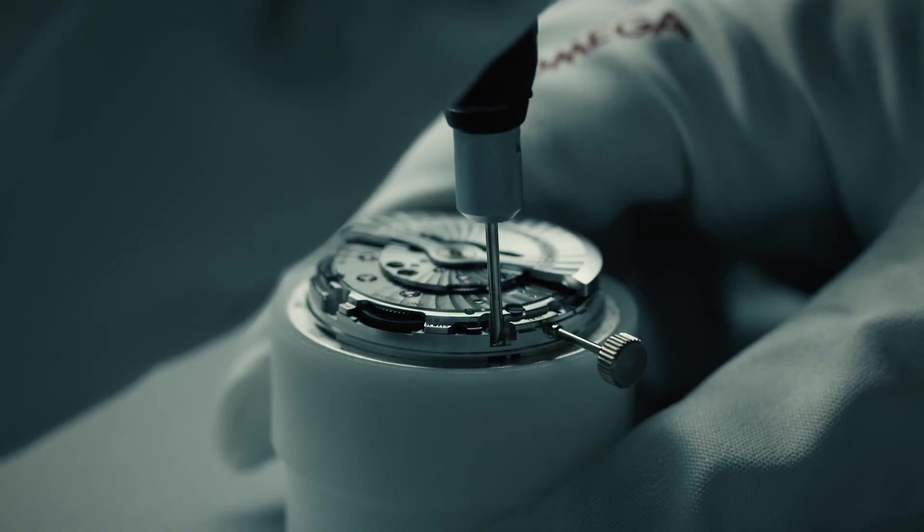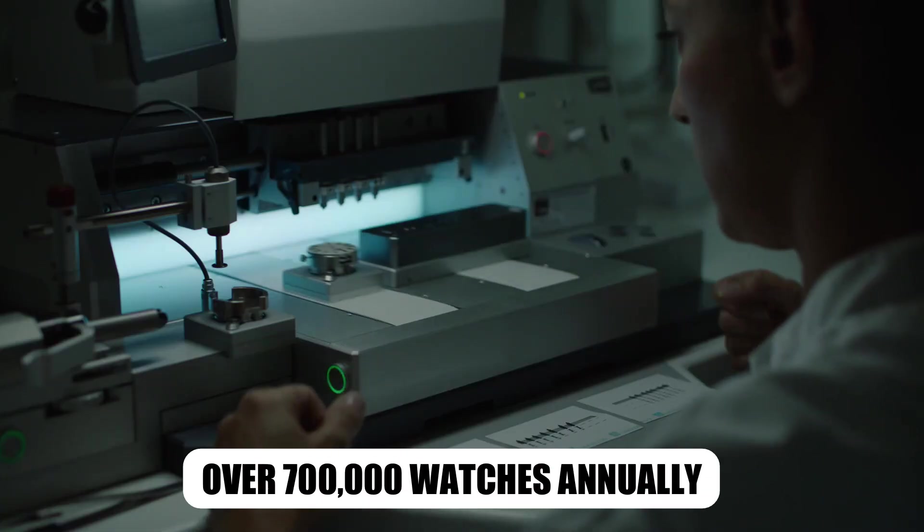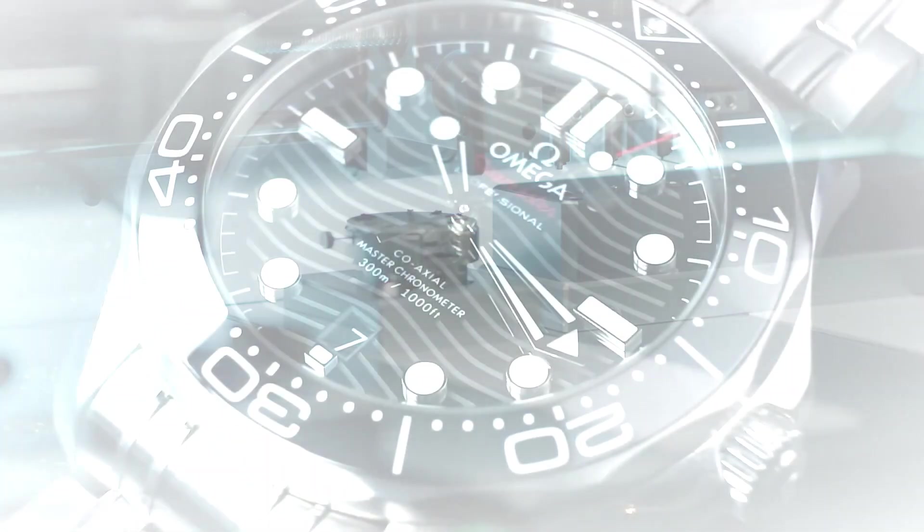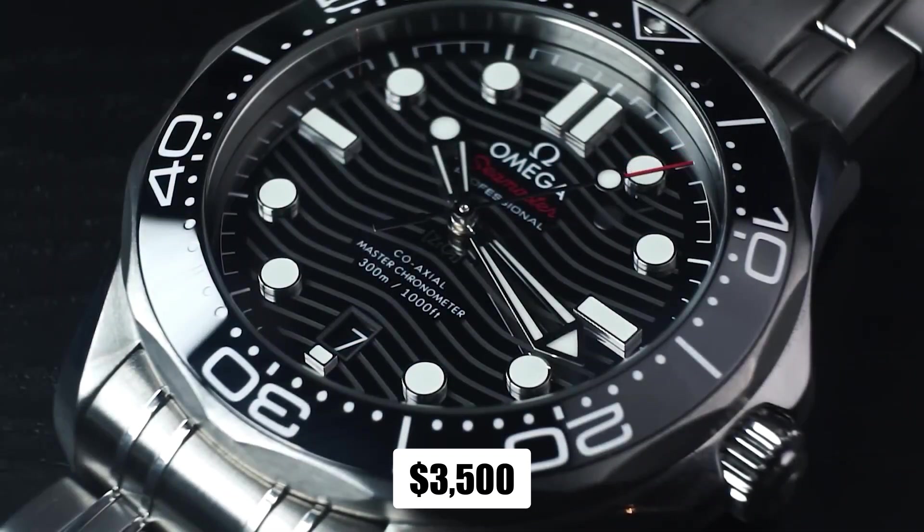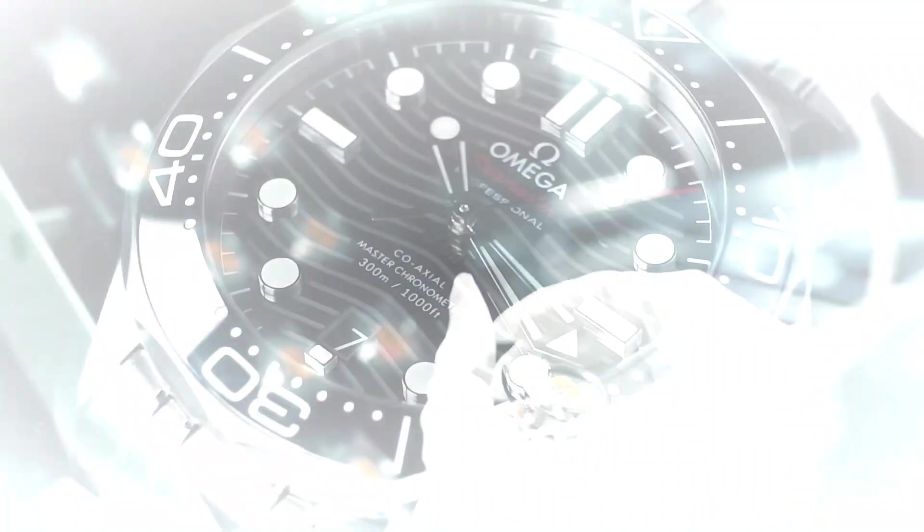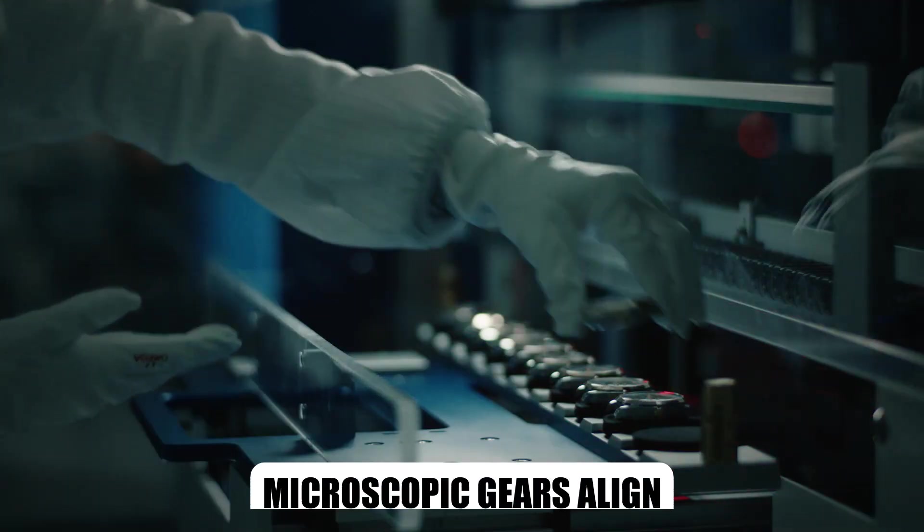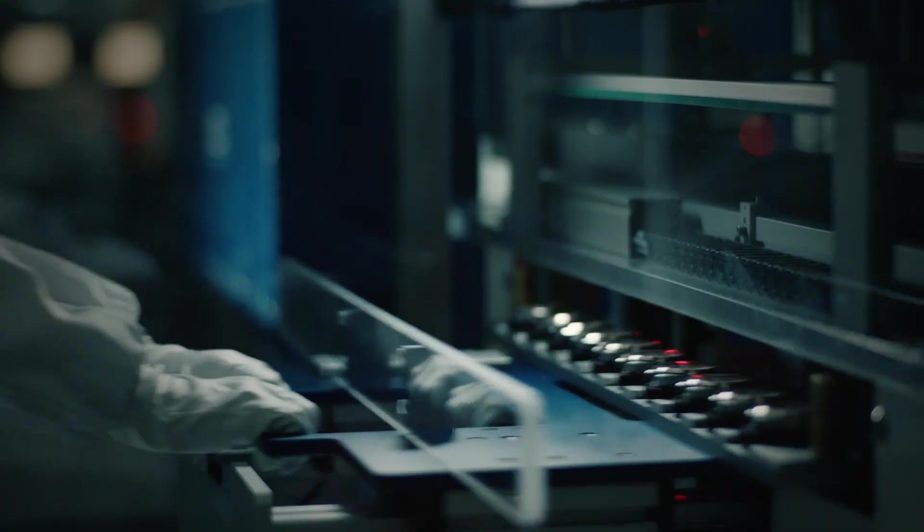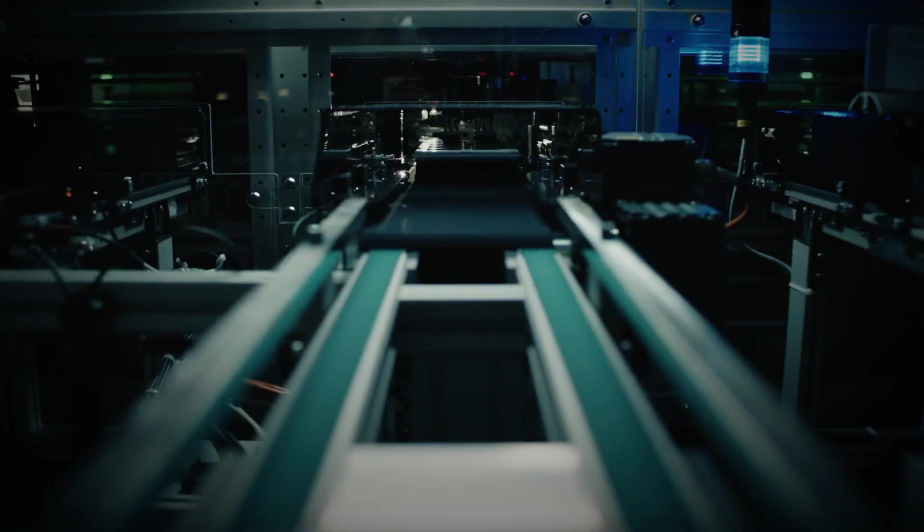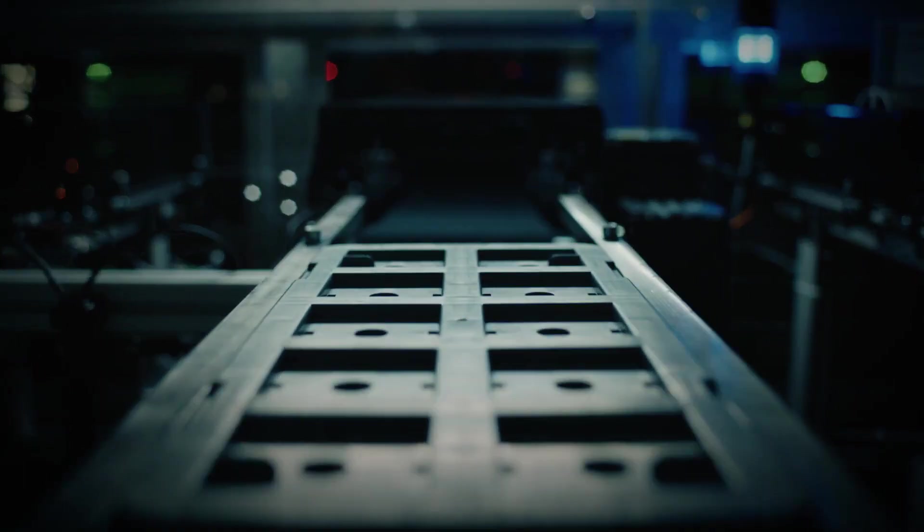Did you know that Omega produces over 700,000 watches annually, each starting at around $3,500? Molten metal pours and microscopic gears align with millimeter precision. This is how Omega crafts time itself.